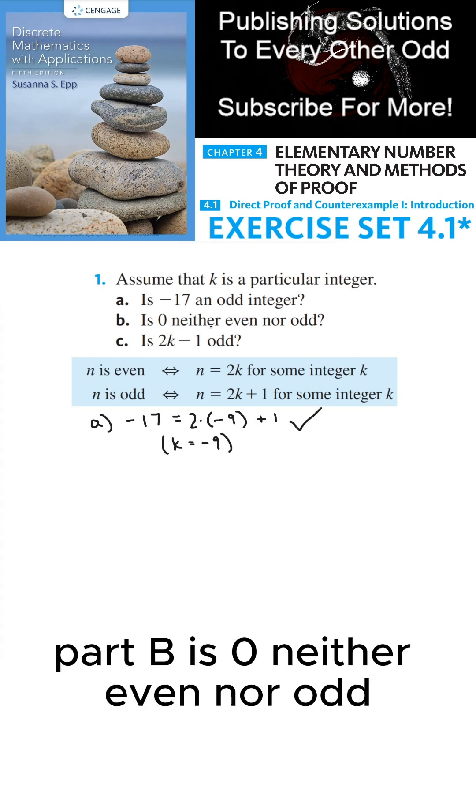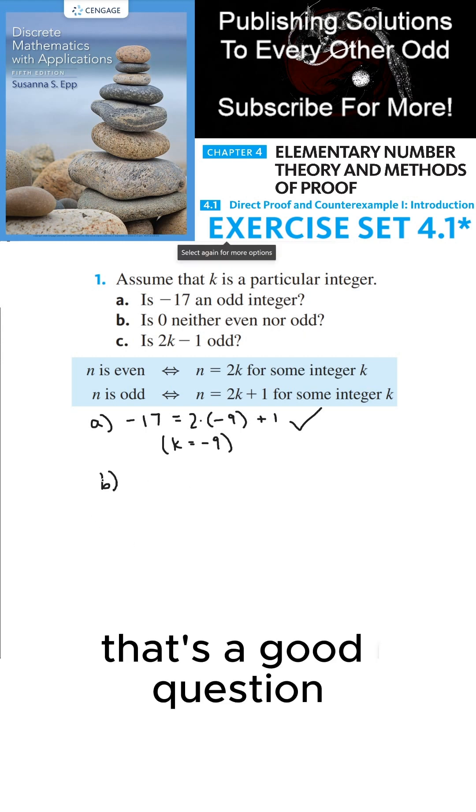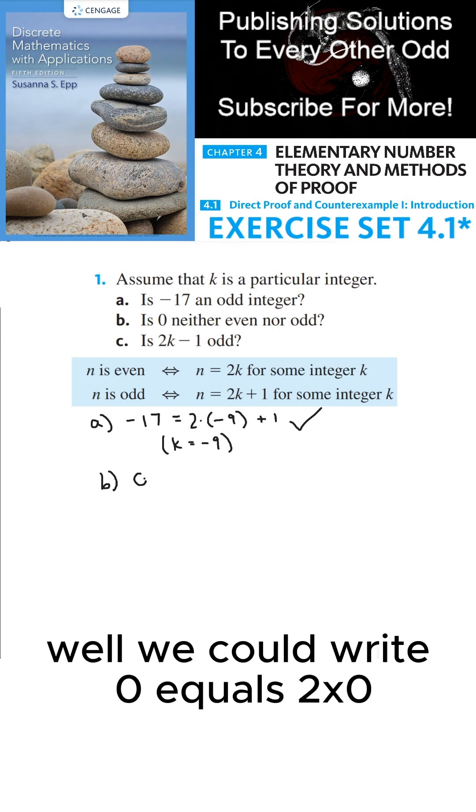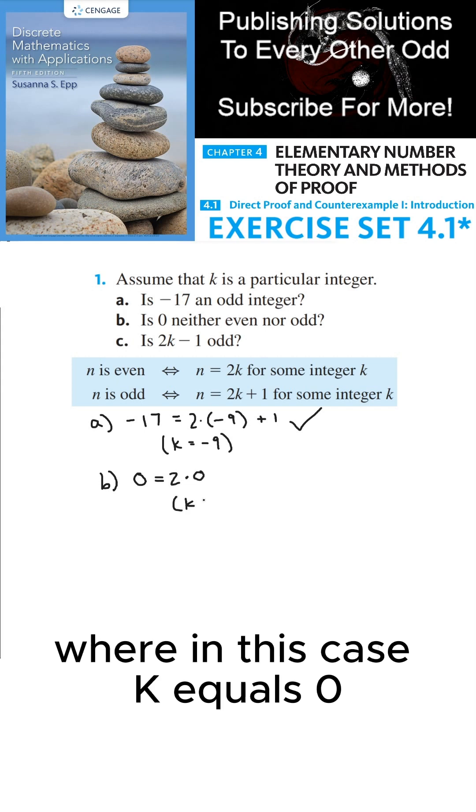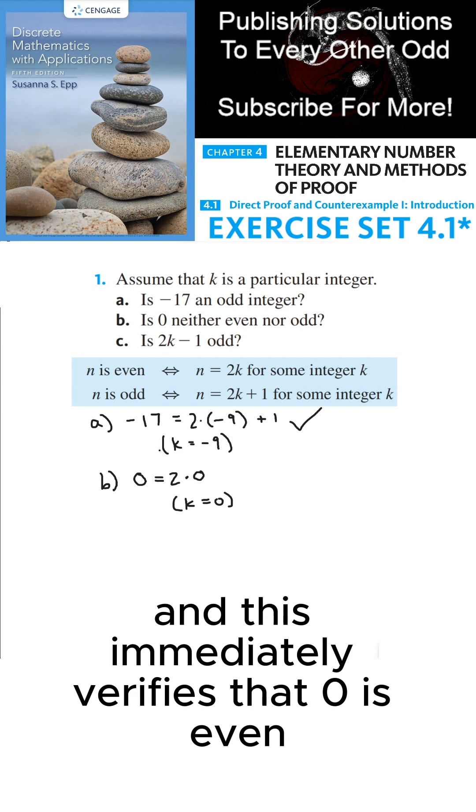Part b, is 0 neither even nor odd? That's a good question. Well, we could write 0 equals 2 times 0, where in this case k equals 0. And this immediately verifies that 0 is even.